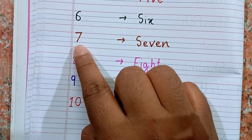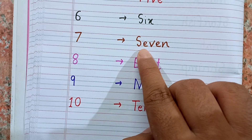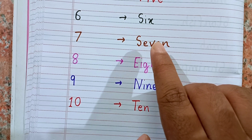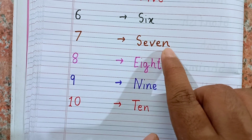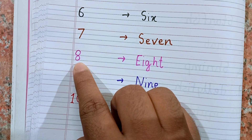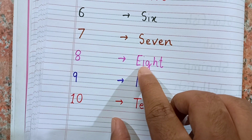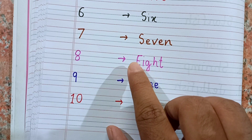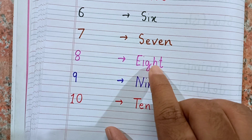The spelling of 6 is S-I-X. After 6 the next number is 7. Which number is this? This is 7, and the spelling of 7 is S-E-V-E-N. Remember the spelling: S-E-V-E-N. After 7 the next number is 8. This is 8.